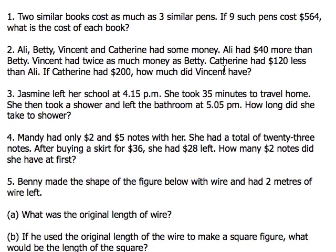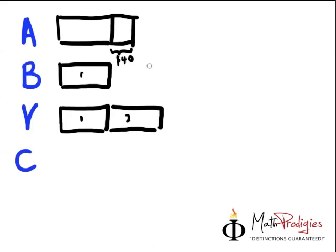We take the same unit and we take two times of it, so we have two boxes or two units for Vincent. Finally, it says that Catherine had $120 less than Ali. This is a little tricky, I need you to really pay attention.